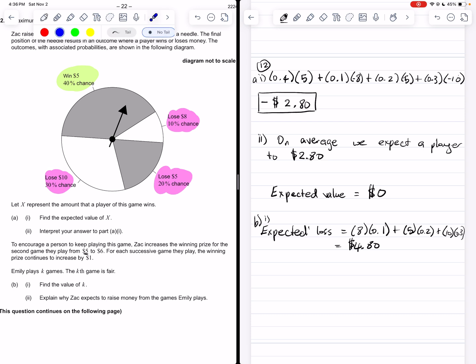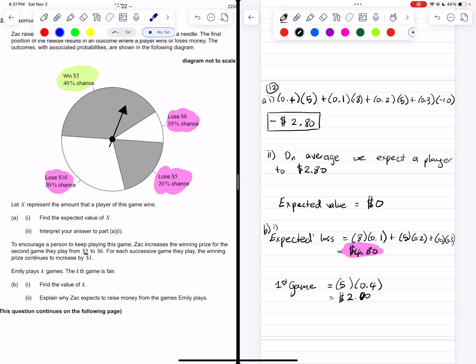So that means that this game will be fair once the winning amount gets up to $4.80. So now we have to look at the winning part and see how long it will take or how many gains it will take for that winning to get up to $4.80. So let's look at what happens in the beginning. In the beginning, so let's say the first game, the winning amount, so that part highlighted in green, is going to be equal to $5 times 40%, so times 0.4. And that is $2. So that's not enough to even it out. We want a number that matches that $4.80 that we have here. And that's obviously not $4.80.